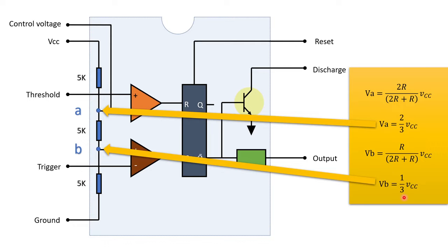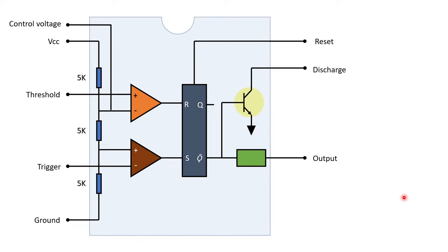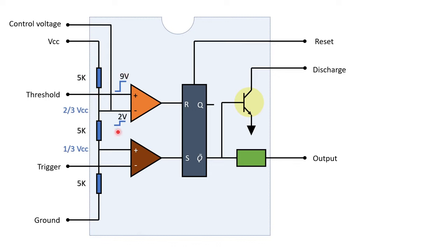Both these reference voltages are given to the comparator. A comparator is a device that compares both inputs and gives output according to which input is higher. For example, if the input to the non-inverting terminal is 9V and the inverting terminal is 2V, the positive terminal is at a higher voltage level, resulting in a digital output of high or 1. If the input to the positive terminal is lower than the negative terminal, it results in a digital output of low or 0.